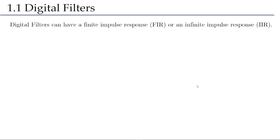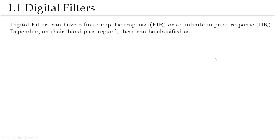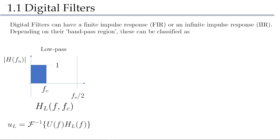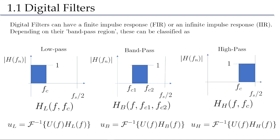The starting point to understand multi-resolution analysis is the theory of digital filters. These can be classified broadly into finite impulse response, FIR, or infinite impulse response, IIR, each with its own design methods. I will skip the details on how to construct filters and focus on how to use them for MRA. Depending on their transfer functions, filters can be classified into three kinds: low-pass filters, band-pass filters, and high-pass filters. Here I show the modulus of their frequency transfer function versus the discrete frequencies on which they act.